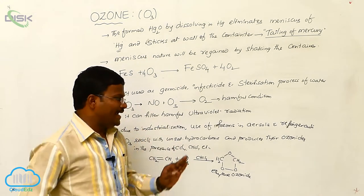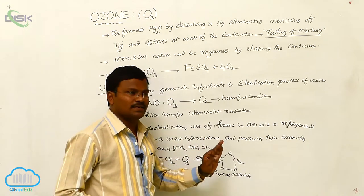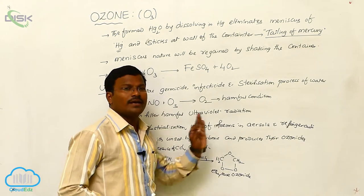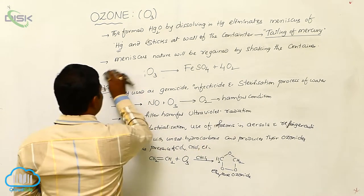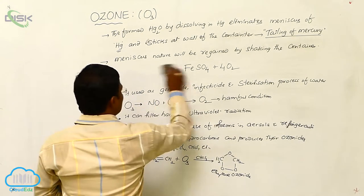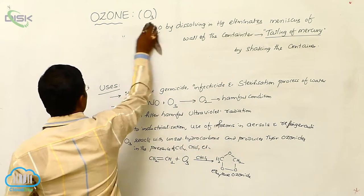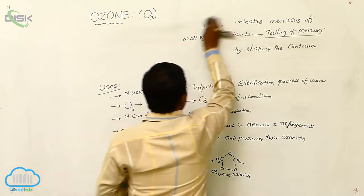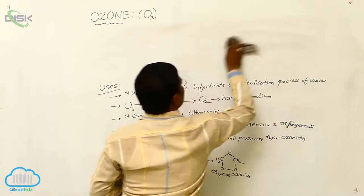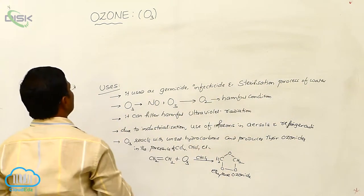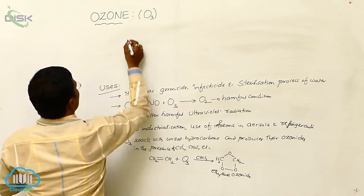The resulting borate buffer, when titrated with potassium thiosulphate (hypo), is used to estimate the amount of ozone present in the given reaction condition. This is called the titrimetric method to estimate the amount of ozone.